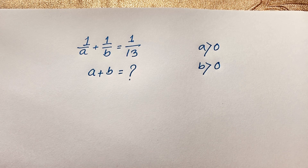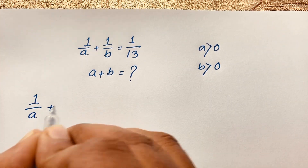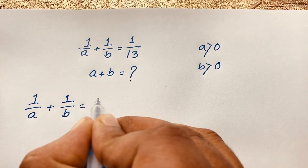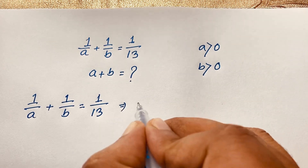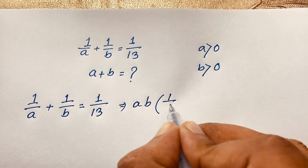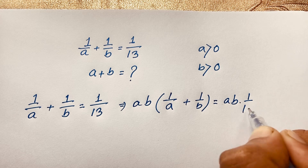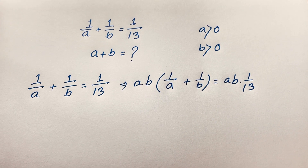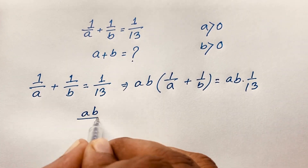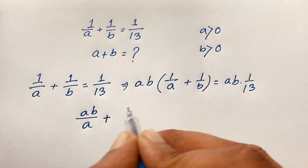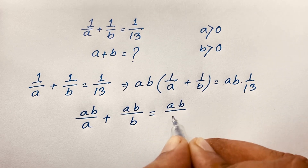To solve this algebraic expression, we start with the equation: 1 over a plus 1 over v is equal to 1 over 13. First, I multiply both sides by av. So av times 1 over a plus av times 1 over v is equal to av times 1 over 13. This gives av over a plus av over v, equal to av over 13.